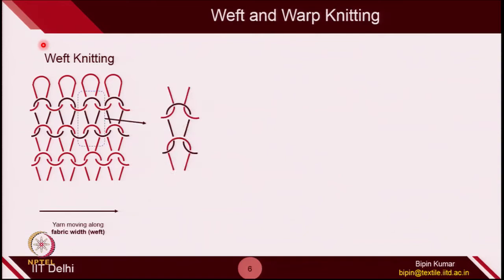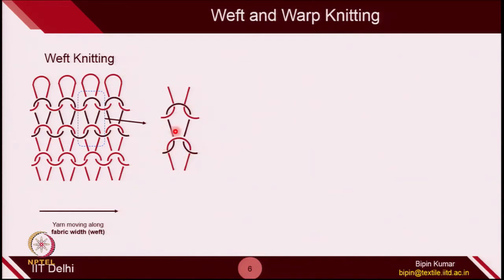If you see the loop in weft knitting, it is perfectly symmetric. The two legs are perfectly symmetric — if you take the mirror image, one leg is just the mirror image of the other. The foot segments also look like perfect mirror images. So the overall architecture of the loop inside the fabric is perfectly balanced, because the forces acting on this loop are balanced in such a way that they cancel each other.